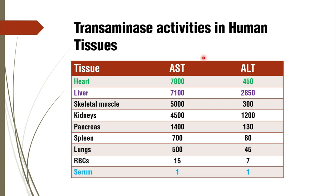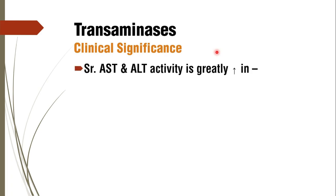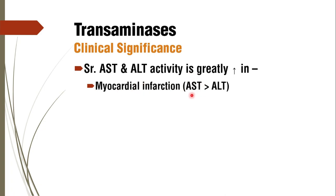When studying transaminases — even for hepatitis — AST and ALT are not investigated individually; both are always tested together to obtain the AST-to-ALT ratio. In myocardial infarction, both transaminase activities are increased, but the extent of rise of AST is greater compared to ALT.